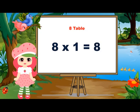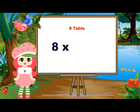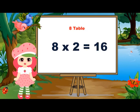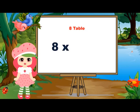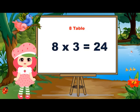Eight ones are eight. Eight ones are eight. Eight twos are sixteen. Eight twos are sixteen. Eight threes are twenty-four. Eight threes are twenty-four.